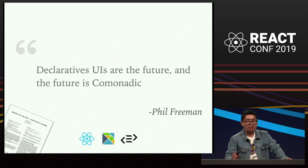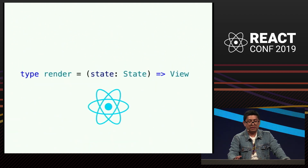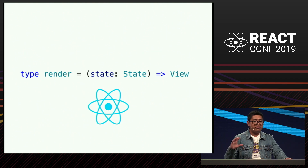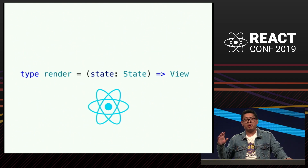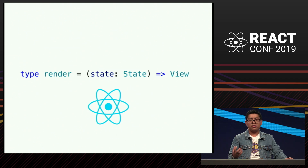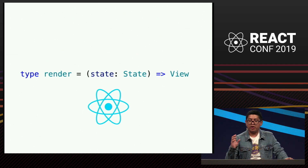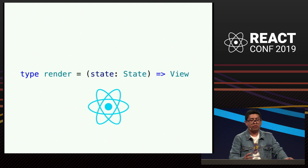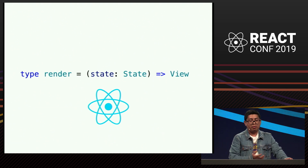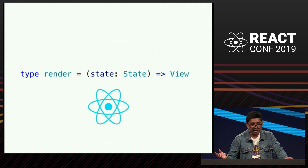So we're going to see what a declarative UI is. For a declarative UI you're going to have a render function which evaluates the state and returns a view. It's a very simplistic view of what React is, but React is a perfect example of a declarative UI, as many of our presenters have already explained.